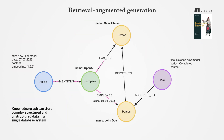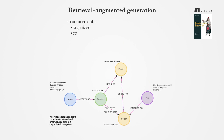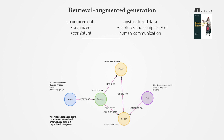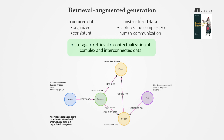Retrieving information from a knowledge graph supports RAG applications. Knowledge graphs integrate structured and unstructured data retrieval strategies within a unified database system. Structured data is organized and consistent, while unstructured data captures the complexity and subtlety of human communication. This approach allows for efficient storage, retrieval, and contextualization of complex and interconnected data, making it ideal for RAG applications.